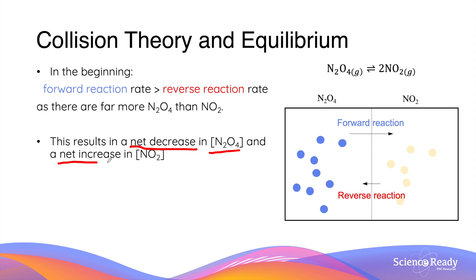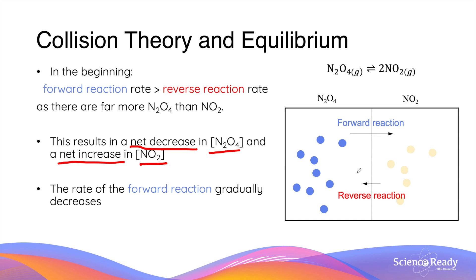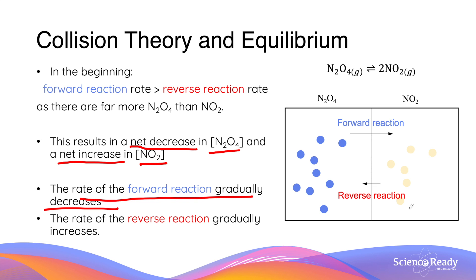Since the forward reaction rate is greater than the reverse reaction rate at the beginning, we see a net decrease in N2O4 and simultaneously a net increase in NO2. However, as N2O4 decreases, the collision rate between those molecules decreases, causing the forward reaction rate to gradually decrease. As more NO2 forms, the collision rate between NO2 molecules increases, and therefore the rate of the reverse reaction gradually increases.